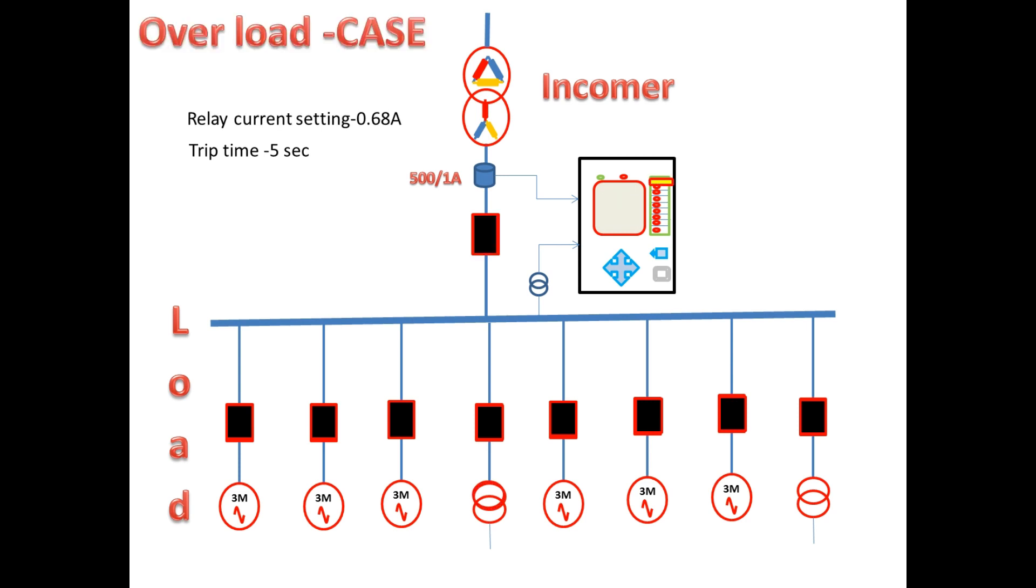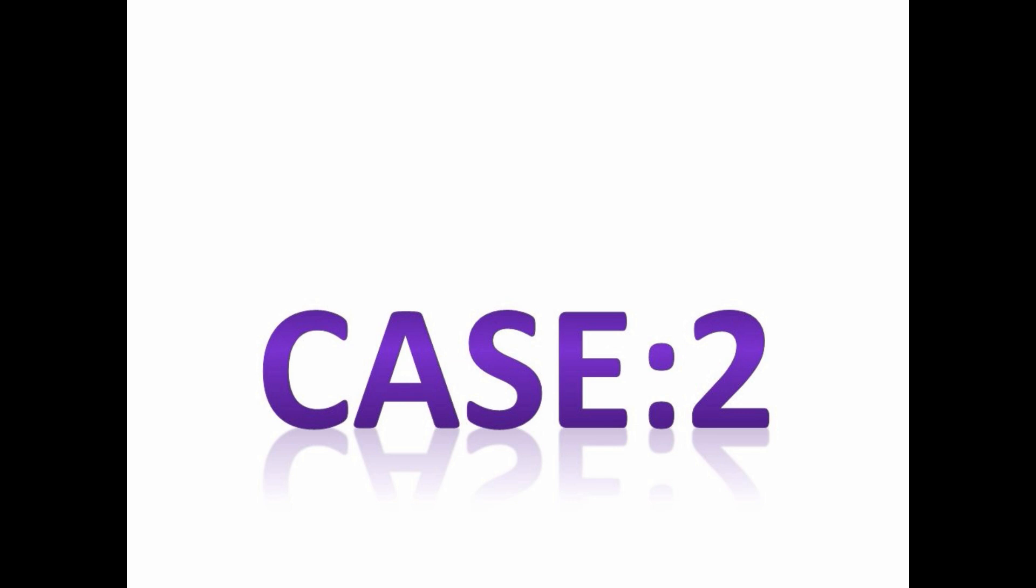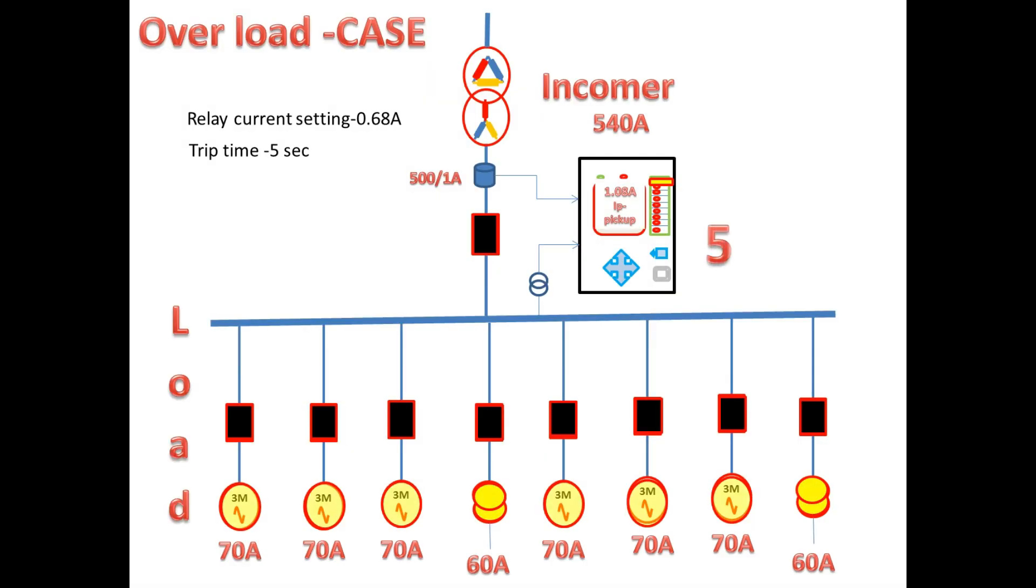Now we go for case 2 if all outgoing get overload. In this case the incomer gets 540A primary and secondary 1.08A according to the CT ratio. So it is greater than the I set. Due to this the relay will start pickup and it will give trip by 5 seconds.